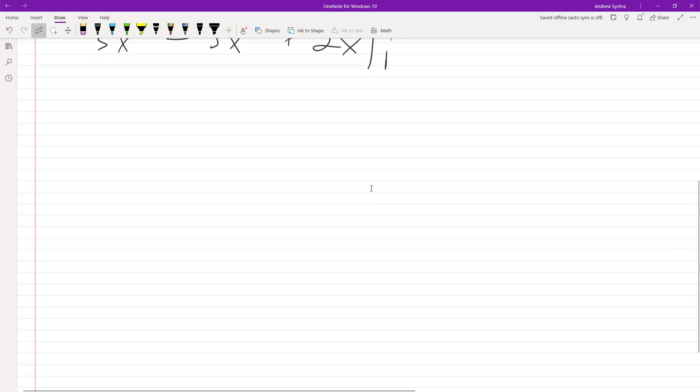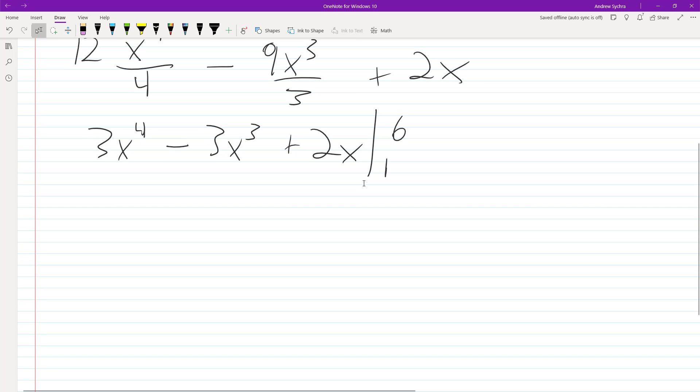So that's going to be starting off here. So we plug in six first. So three times six raised to the fourth minus three times six cubed plus two times six minus, and these are going to be quantities.